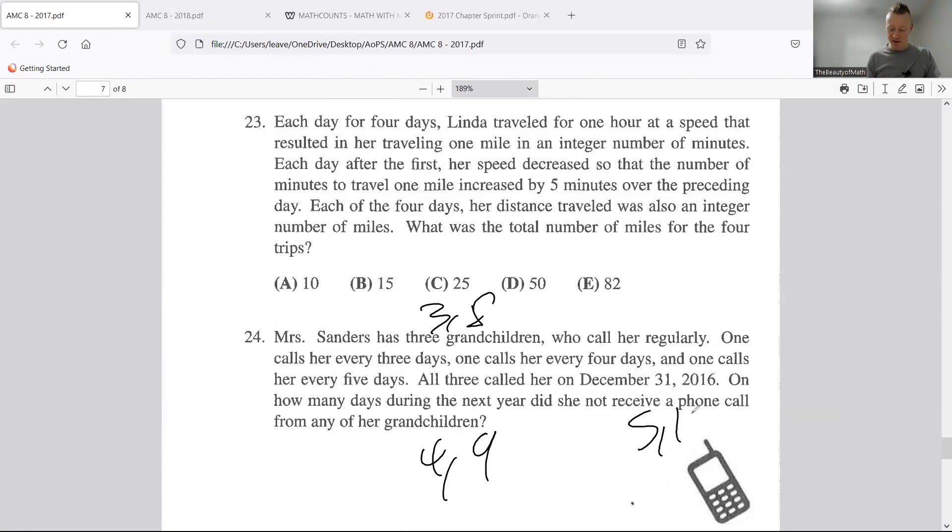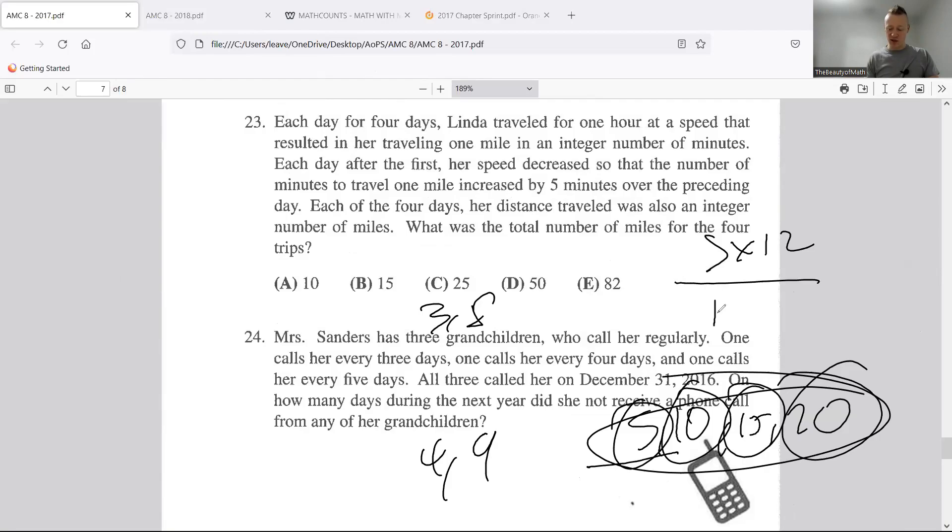That's it. It's five minutes per mile, ten minutes per mile, fifteen minutes per mile, twenty minutes per mile. Five times twelve is going to give you twelve miles. Sixty minutes, twelve miles.